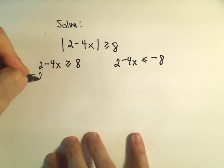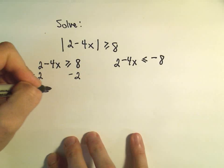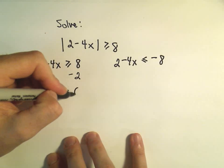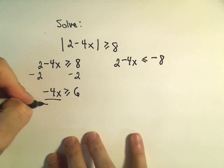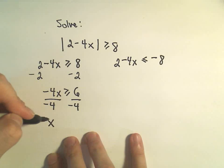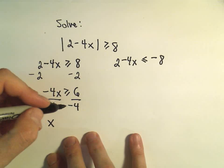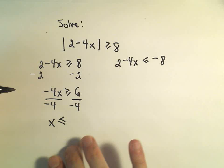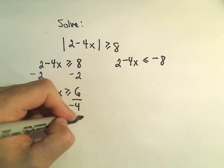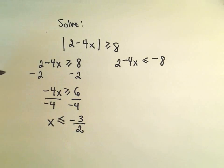Okay, so I could start by subtracting 2 from both sides. That would give me negative 4x greater than or equal to, so 8 minus 2 is 6. And now to get the x by itself, we could divide both sides by negative 4. So that would give us x on the left. Remember if we divide by a negative, the inequality flips direction. And 6 over negative 4 would reduce to negative 3 halves.